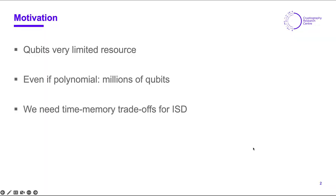As we all know, we are in the transition to the use of post-quantum cryptography, which aims at providing data security even in the presence of quantum adversaries. But before we arrive in the era of large-scale quantum computers, we are likely to have access to small quantum computing devices. For these devices, even if we try to instantiate algorithms which have, asymptotically speaking, a polynomial amount of space usage — only of qubits demand — this might not be sufficient because in practice this still might mean millions of qubits necessary to run the algorithm.